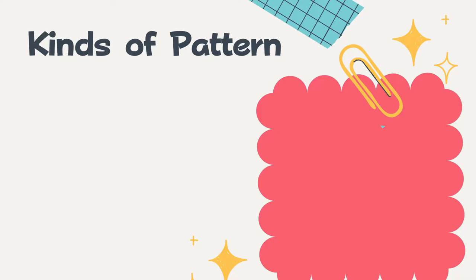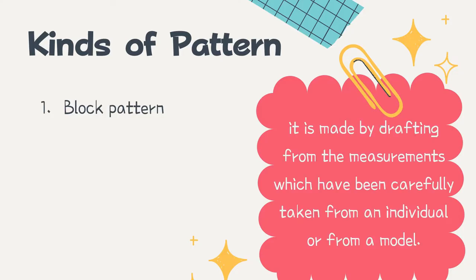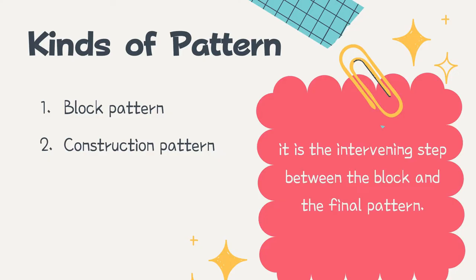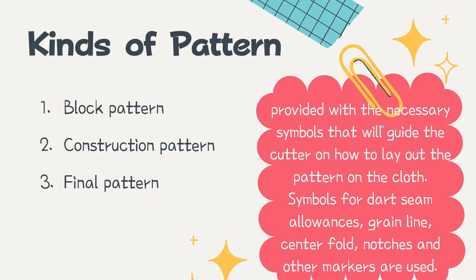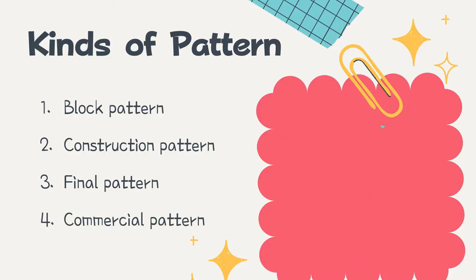There are different kinds of patterns. The first is the block pattern, which is made by drafting from measurements carefully taken from an individual or a model. The second is the construction pattern, which is the intervening step between the block and the final pattern. Third is the final pattern, provided with necessary symbols — such as dart, seam allowances, grainline, centerfold, notches, and other markers — to guide the cutter on how to lay out the pattern. The fourth is the commercial pattern, which refers to a standardized, ready-made pattern that is bought.